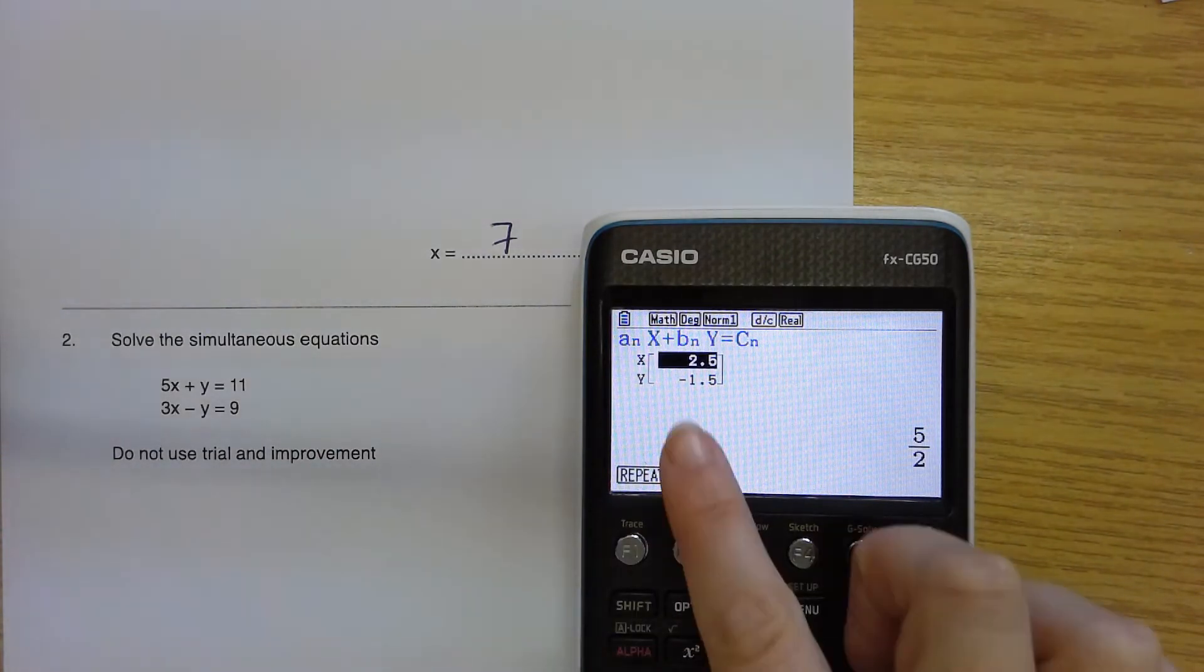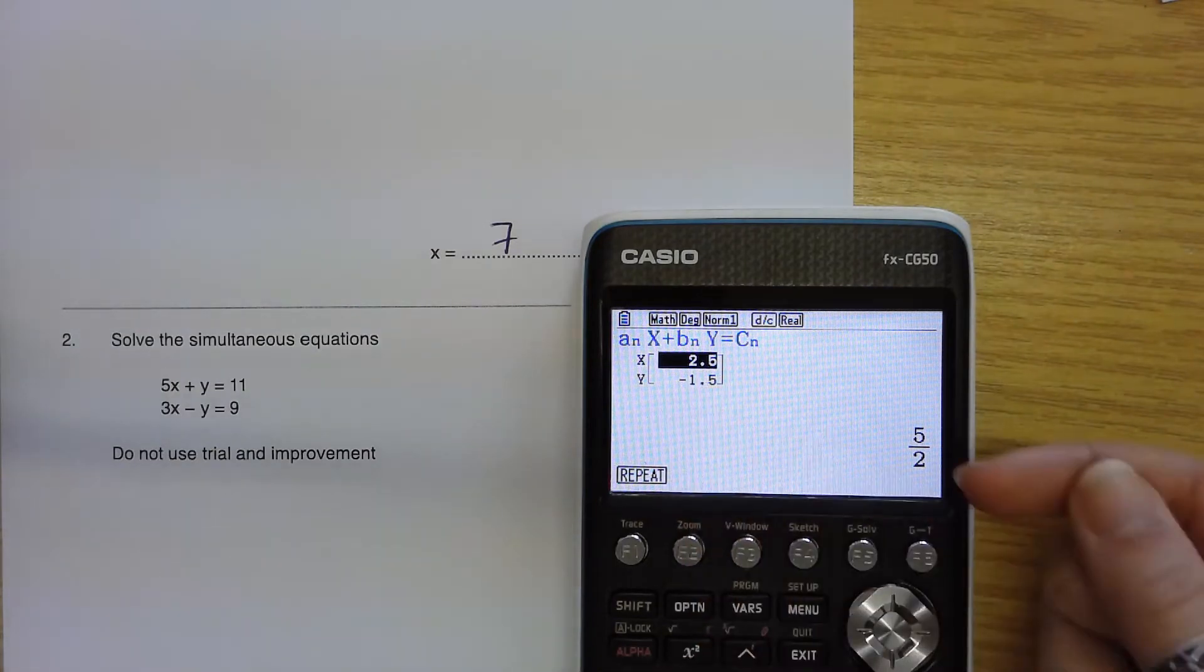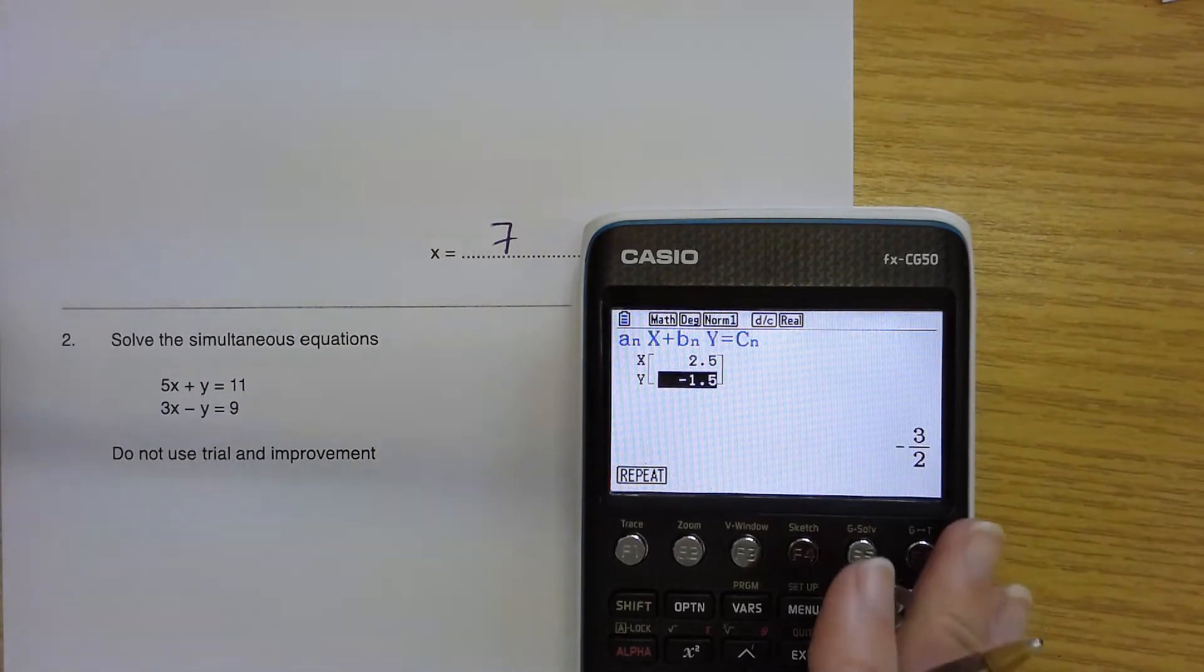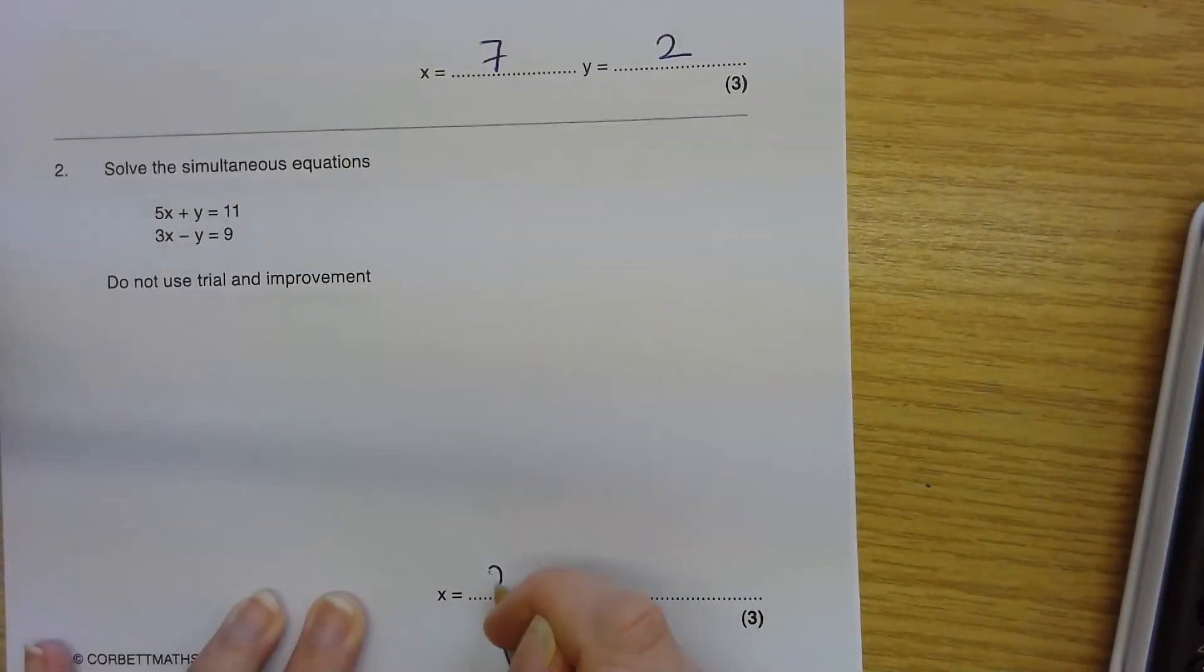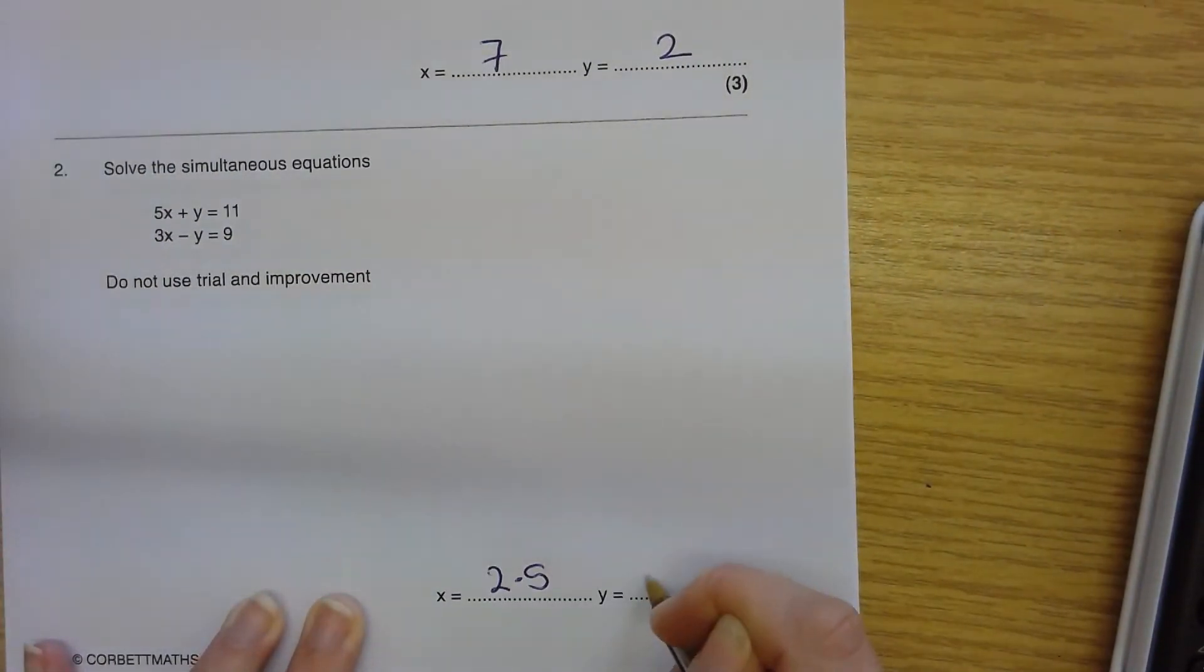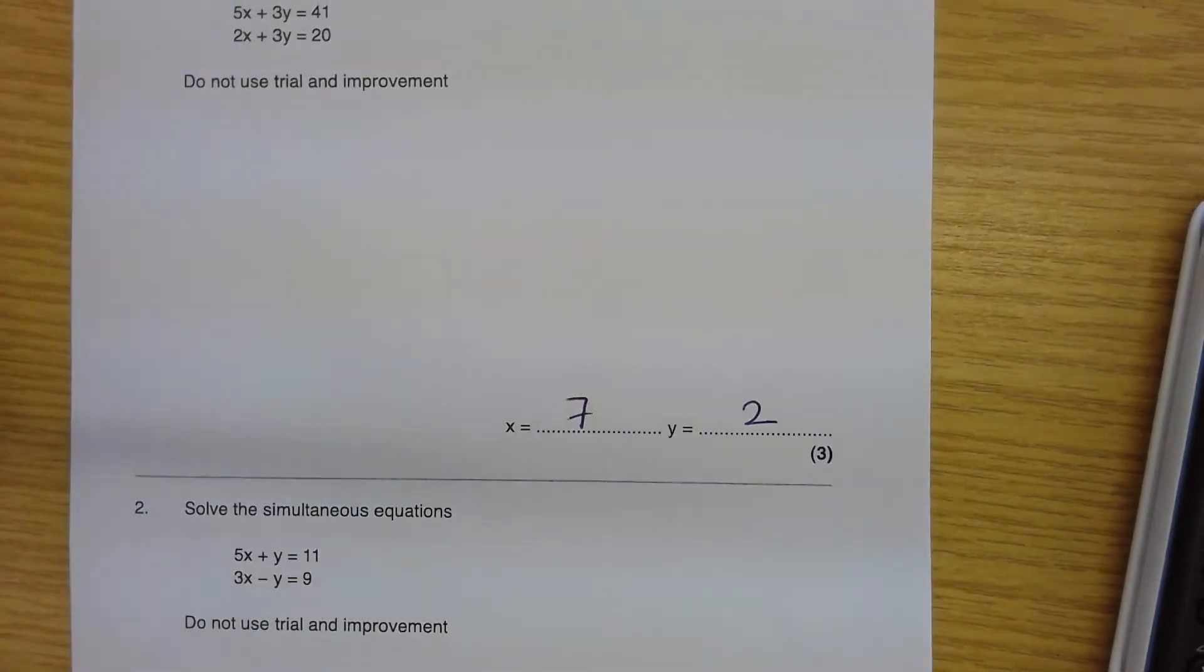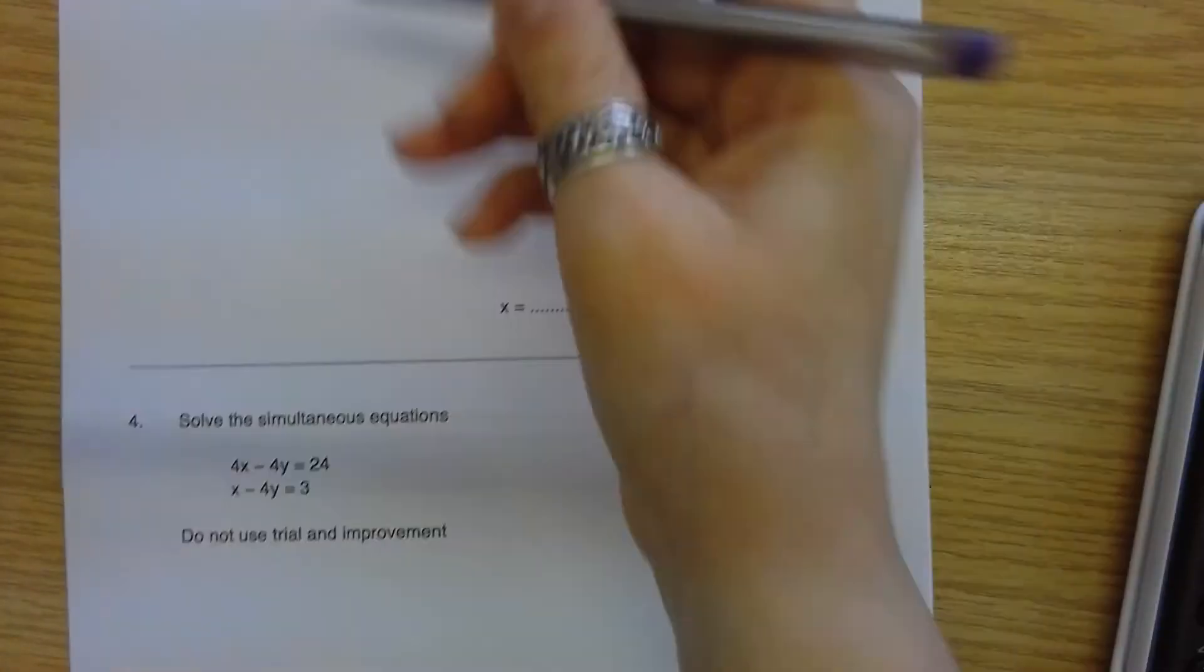Then I have 2.5. It gives me a decimal here. It will give me a fraction here in this part of the screen, depending on how you want your answer written. And then Y is minus 1.5. So X is 2.5 and Y is negative 1.5. So let's just have a little look at some more questions.